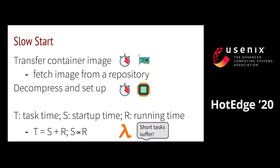This operation can consume network or compute resources and can take a non-trivial amount of time to complete. Say if the compute tasks at the edge have a short running time, then the startup time and overhead can be too much for the overall efficiency — for example, in the case of serverless functions.